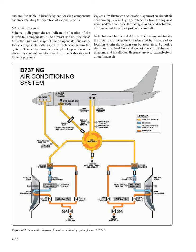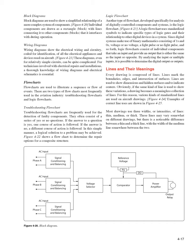Block diagrams are used to show a simplified relationship of a more complex system of components. Individual components are drawn as rectangles (blocks) with lines connecting them to other components they interface with during operation. Wiring diagrams show the electrical wiring and circuitry, coded for identification, of all the electrical appliances and devices used on aircraft. These diagrams, even for relatively simple circuits, can be quite complicated. For technicians involved with electrical repairs and installations, a thorough knowledge of wiring diagrams and electrical schematics is essential.